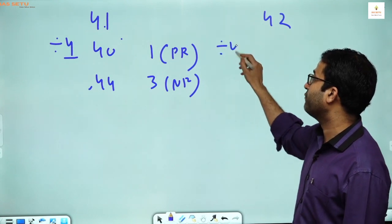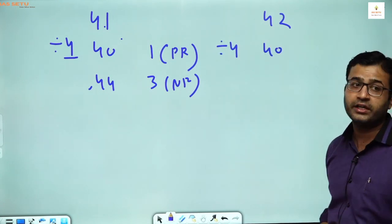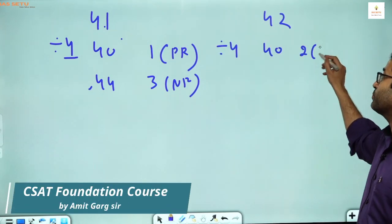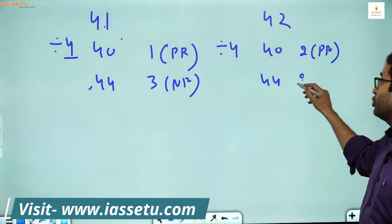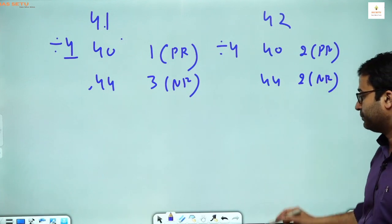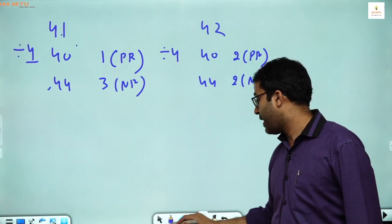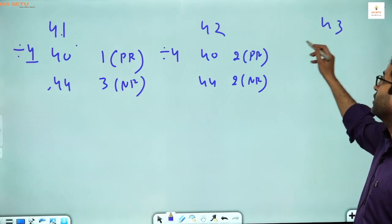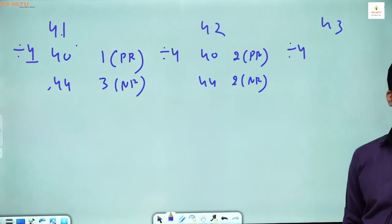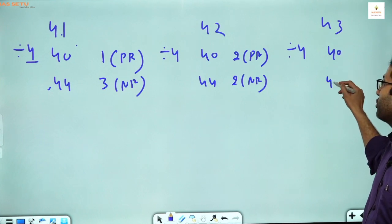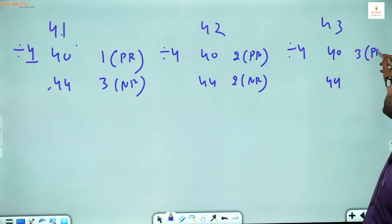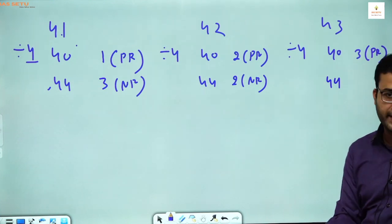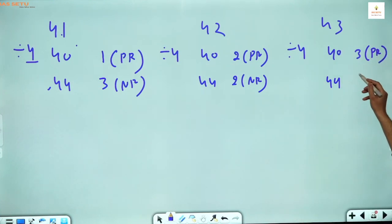Similarly, 42 divided by 4: the multiple of 4 nearby is 40, so it is 2 extra — positive remainder is 2. As compared to 44 it is 2 less — so negative remainder is 2. Next, 43 divided by 4: compared to 40 it is 3 extra, which is the positive remainder we learned in school. But compared to 44 it is 1 less, so the negative remainder is 1.